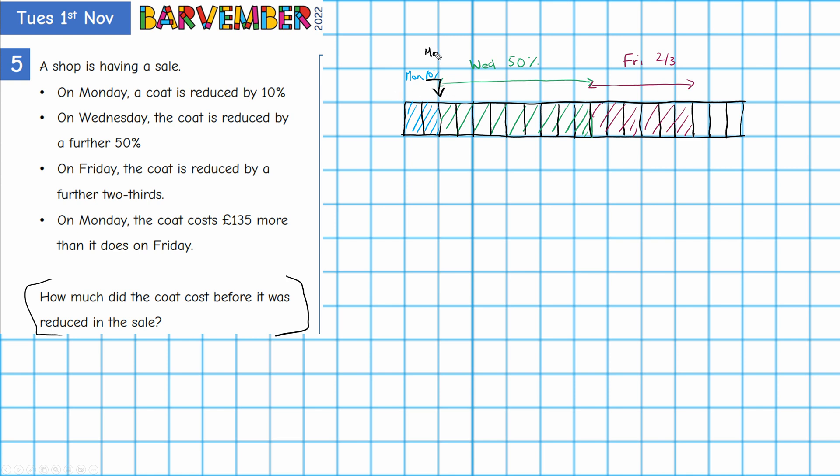Okay Monday's price is there. And what we're told is on Monday the coat costs £135 more than it does on Friday. What's the cost on Friday? Well on Friday the cost is here. Okay that's the discount that took place presumably first thing on Friday morning and on Friday that was how much the coat costs. So the difference is here. And we're told that that difference is £135.